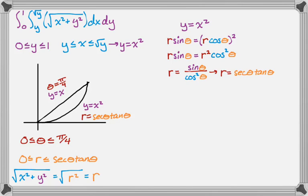So we have that. So we can rewrite our integral. So it's 0 to pi over 4, 0 to secant theta tan theta. And then it's going to be r, and then r dr d theta, because you always pick up that extra r, so you don't want to forget that.